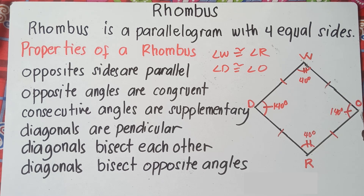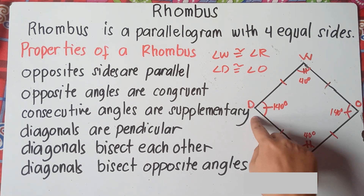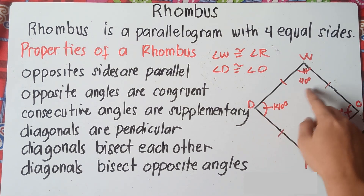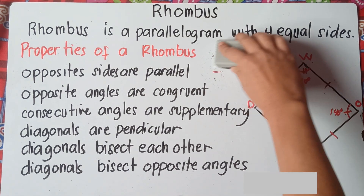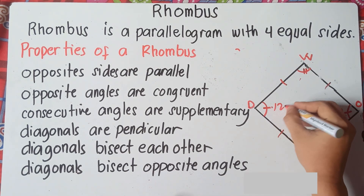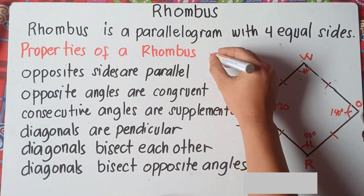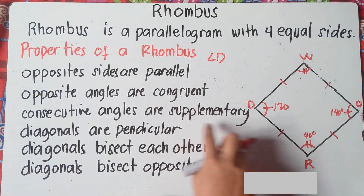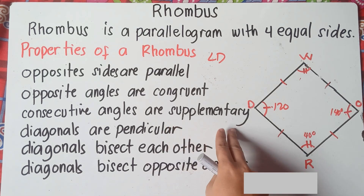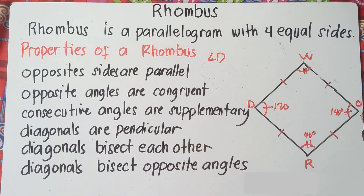Let's go to the third property: consecutive angles are supplementary. So angle D plus angle W should equal 180 degrees. From the word supplementary, it means that the sum of two angles must equal 180. So if angle D is 120 degrees, angle D plus angle W must equal 180 degrees.